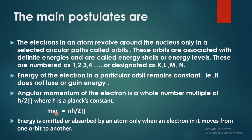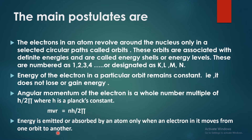The last point is: energy is emitted and absorbed only when an electron moves from one orbit to another orbit. When the electron stays in the same orbit, it cannot emit energy. The energy of an electron in a particular orbit is constant.